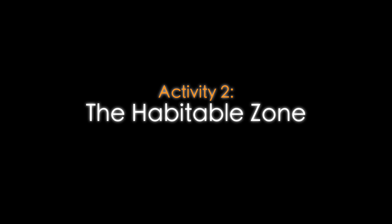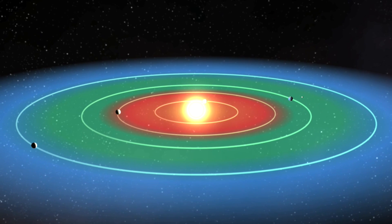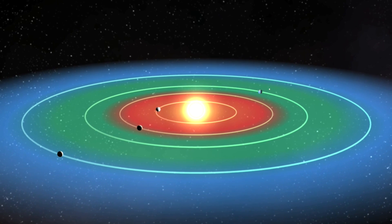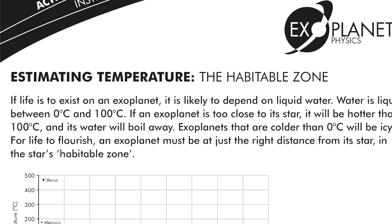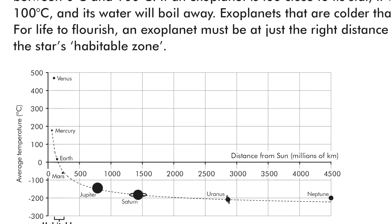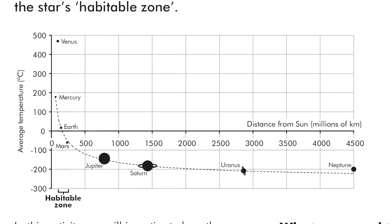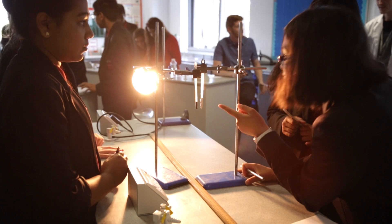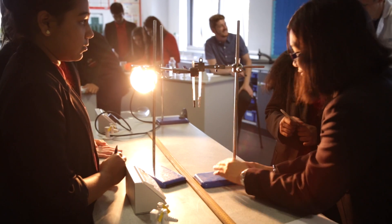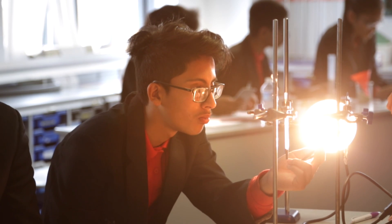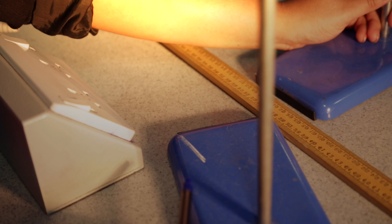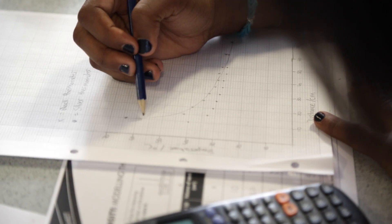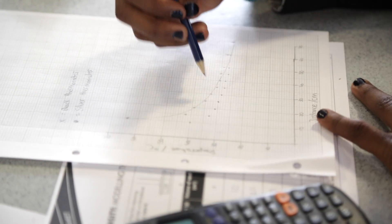The second activity introduces the habitable zone — the region around a star where liquid water is most likely to exist. They investigate how the temperature of two thermometers with different reflectivities varies with distance from a heat source, and then link this back to habitable zones.